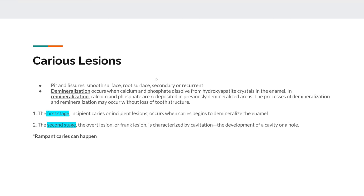There are different types of carious lesions. You can get cavities anywhere on a tooth, including the root surface if it's exposed. You can get a cavity around an amalgam filling, composite filling, a crown, or a bridge. For example, you can't get a cavity on a crown itself, but you can get a cavity around the crown if it's not seated properly. The important thing to note is that cavities eat away at the tooth.